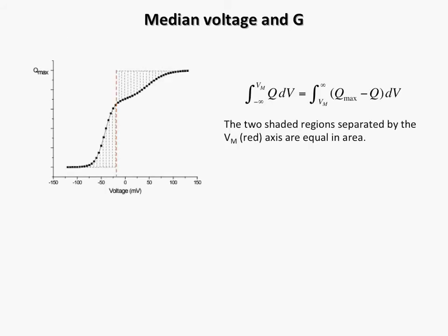Using the formalism first derived by Jeffries Wyman, we define the median voltage of activation, V sub m, as the voltage such that the area bound by the QV curve, the median voltage, and the Q equals zero axis, equals the area bound by the QV curve, the median voltage, and the Q max axis. It turns out that the chemical work integral equals Q max, which is the maximum number of charges transferred during activation of the channel, times V sub m, the median voltage for activation.